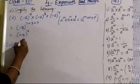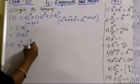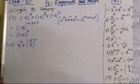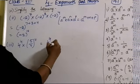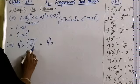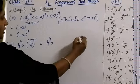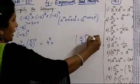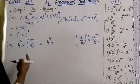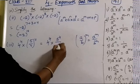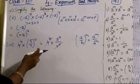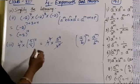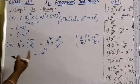Third question: 4⁴ × (5/4)⁴. Using the law (a/b)^m = a^m/b^m, expand (5/4)⁴ as 5⁴/4⁴. So the expression becomes 4⁴ × 5⁴/4⁴. Cancel the 4⁴ in numerator and denominator, and you get 5⁴ as the answer.